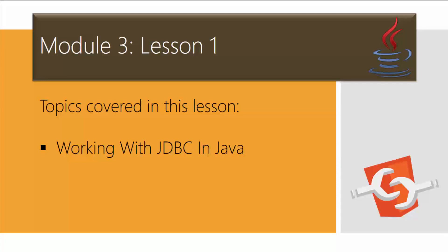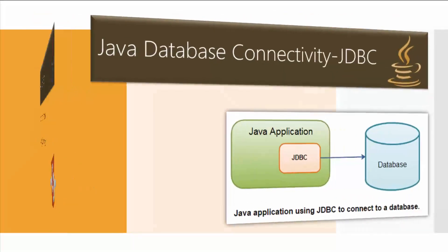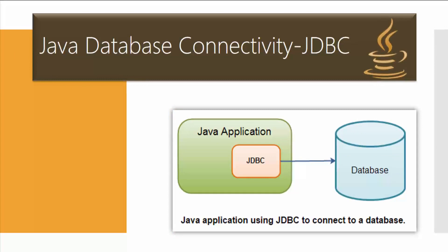Java Database Connectivity — within a Java application we use the JDBC connector to connect to a database. This database could be MySQL, SQL Server, Oracle Server, or any relational database. The important element here is the JDBC connector, and I'll demonstrate later how to download it and install it within our Eclipse editor.